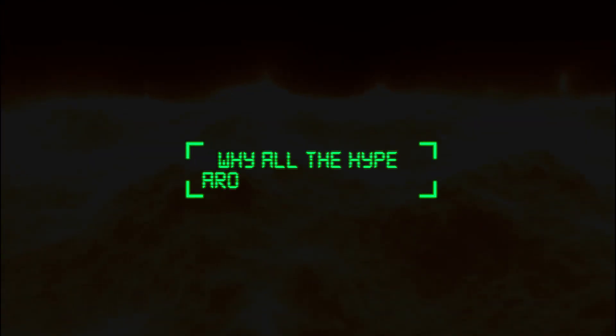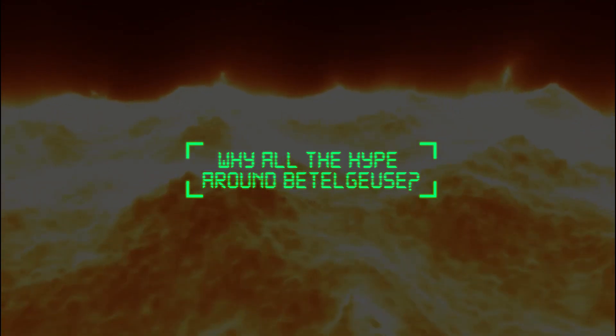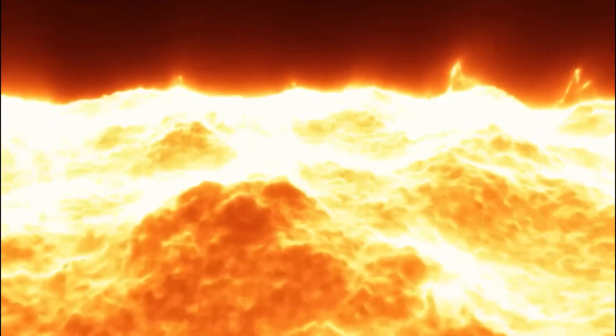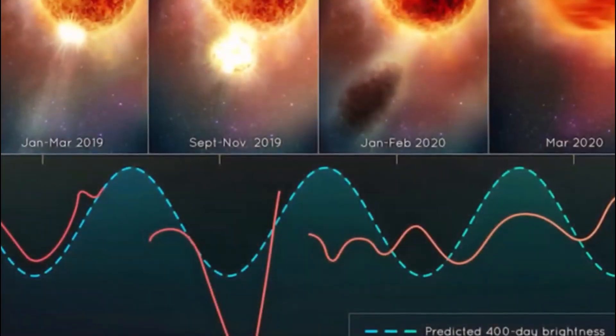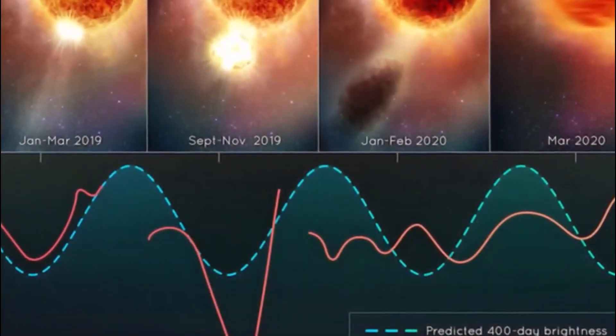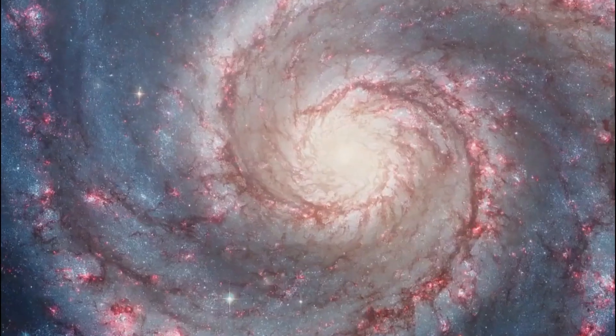So why all the hype around Betelgeuse recently? In case you haven't been following the story, Betelgeuse has been acting super strange over the past few years. Back in 2019, the star started dimming significantly, which set off a wave of speculation that it was about to go supernova.